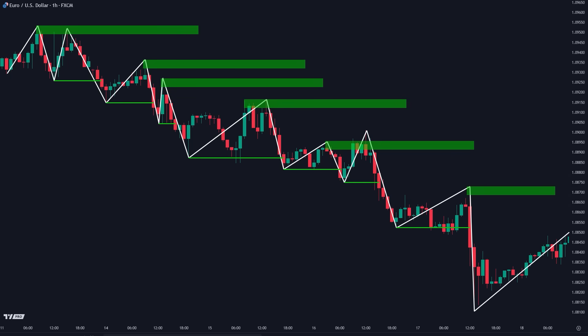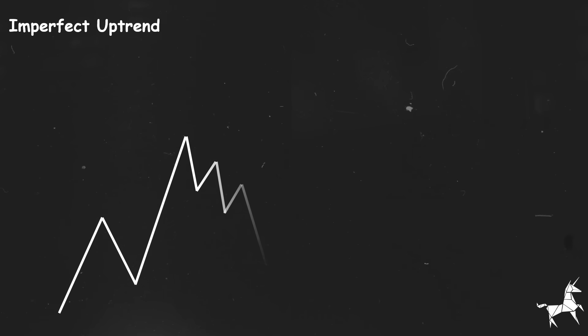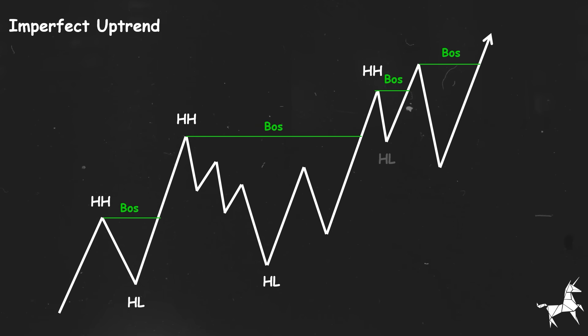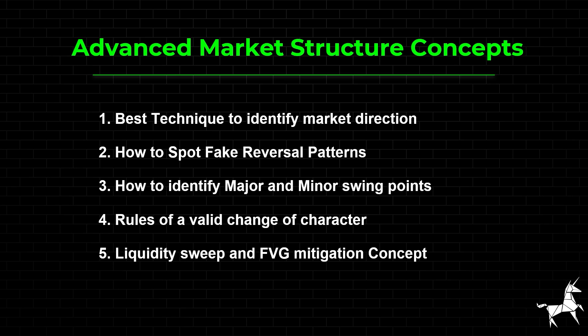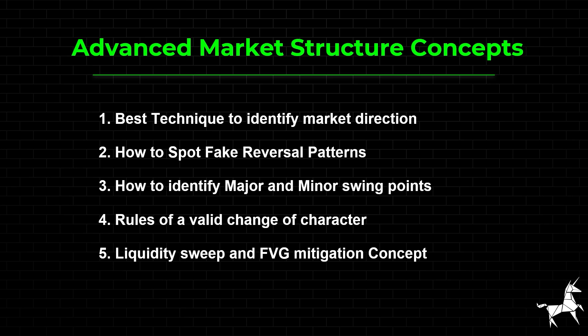That said, the challenge is that the market rarely moves this clearly. In imperfect trending scenarios, the market might break below higher lows but still continue in the same bullish direction, confusing traders who think the uptrend is over. These breaks often happen to grab liquidity or mitigate fair value gap areas. So in this video, we're going to discuss imperfect trending markets and how to identify direction without being misled by fake reversals. We'll show you an advanced trading technique to help you distinguish between major and minor swings within the market structure. Finally, we'll cover the concepts of liquidity sweep and fair value gap mitigation.